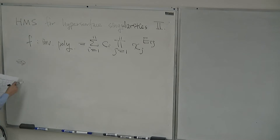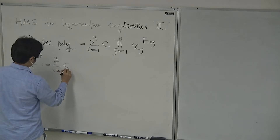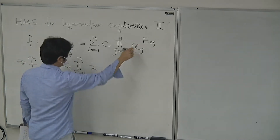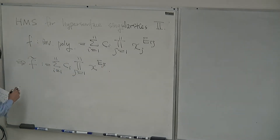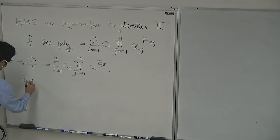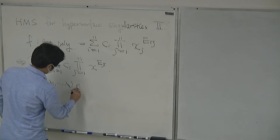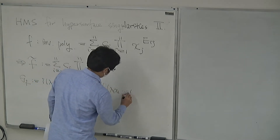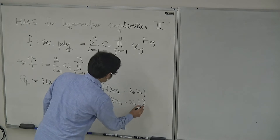Then I can define the so-called Berglund-Hübsch dual of this invertible polynomial. This is the same sum but with the transpose of the matrix, E_{j,i}. There is a symmetry group G_F, which consists of (λ_1, ..., λ_n) in (C*)^n such that F(λ_1 x_1, ..., λ_n x_n) equals F(x_1, ..., x_n).